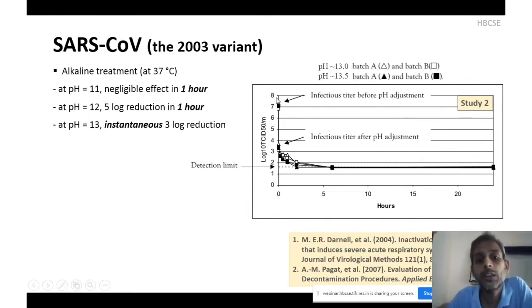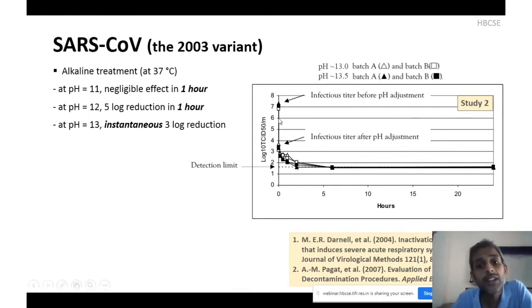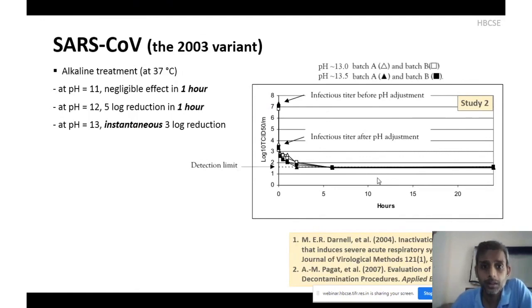At pH 12, there is a 5-log reduction within one hour. At pH 13, interestingly they found instantaneous 3-log reduction within the first minute of treatment. With a higher initial virus titer of 10^7 viruses per ml, at pH 13.5 it took about two hours for complete inactivation, and at pH 13 it took about five hours. If the surface has a lower infection load corresponding to 10^6 virus per ml, it may be inactivated in less than one hour.